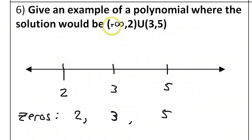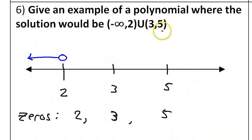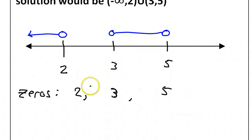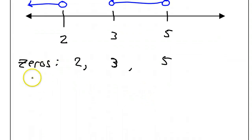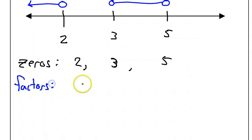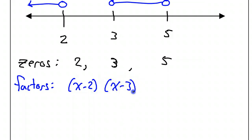Looking at the solution intervals, the endpoints are shown with round parentheses, which means open circles. I'll have an open circle at 2 with solutions going to negative infinity, and then open circles from 3 to 5. Since these are the zeros, the factors we need are x minus 2, x minus 3, and x minus 5.